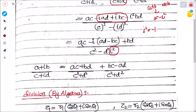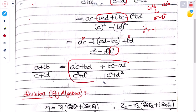Now we separate into real and imaginary parts. The result is: (ac + bd)/(c² + d²) + i·(bc − ad)/(c² + d²). This is the formula for division of two complex numbers in algebraic form.